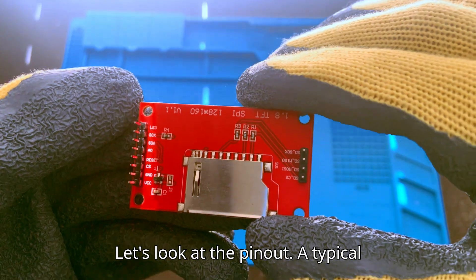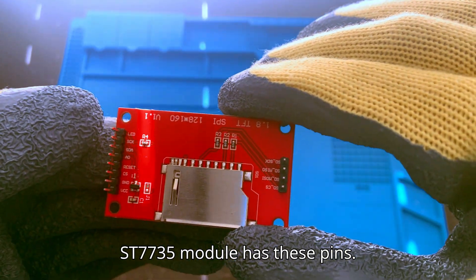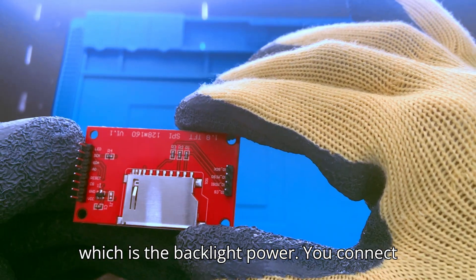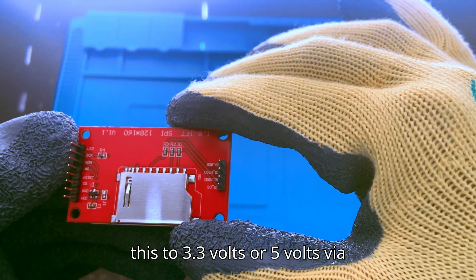Let's look at the pinout. A typical ST7735 module has these pins. LED, which is also called backlight, is the backlight power. You connect this to 3.3 volts or 5 volts via resistor.